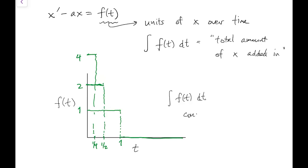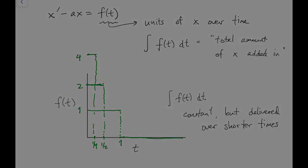The idea is to always keep the total amount added constant but deliver it over shorter time periods. We can formalize this by defining delta sub epsilon as the window function of length epsilon but having unit area under the curve.